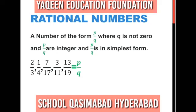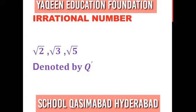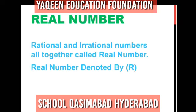Irrational numbers include under root 2, under root 3, under root 5, and similar values. These are irrational numbers, denoted by Q.